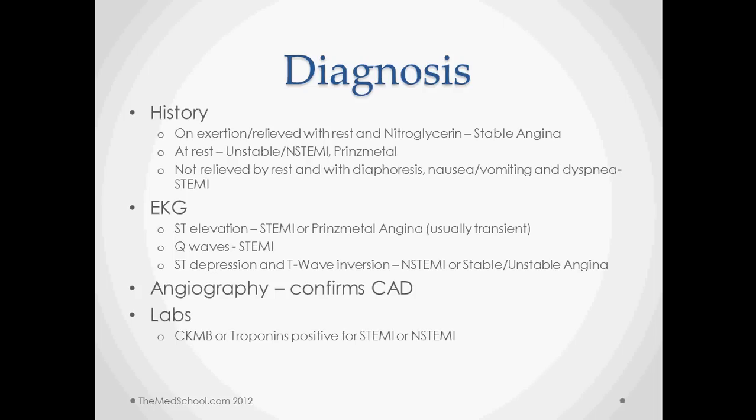Angiography is the gold standard for confirming the diagnosis of coronary artery disease. You also want to get cardiac enzymes like CK-MB and troponin to rule out MI. CK-MB and troponins are fairly similar in diagnostic value, but troponins last longer — up to a week — whereas CK-MB you only have about 48 hours to detect it.